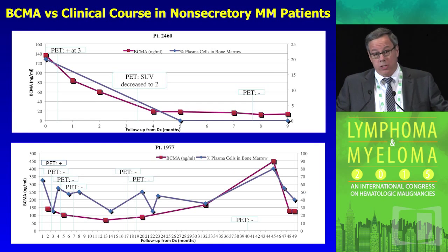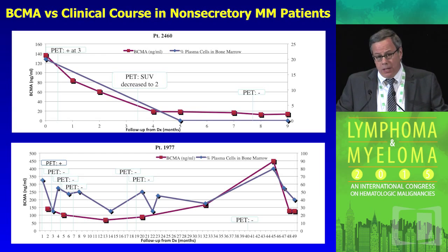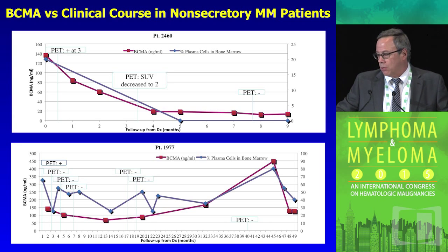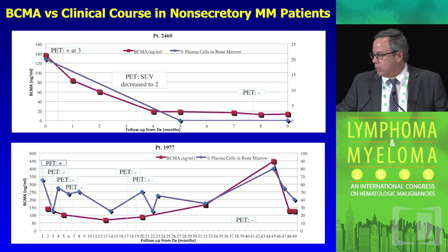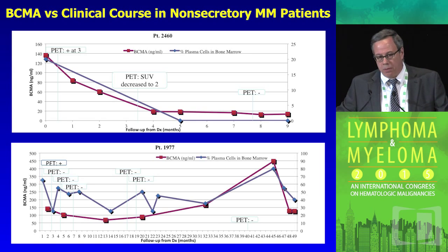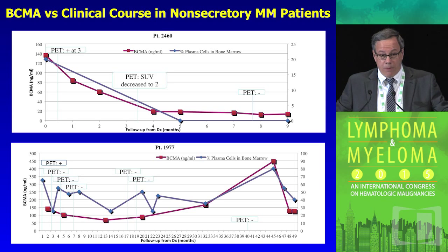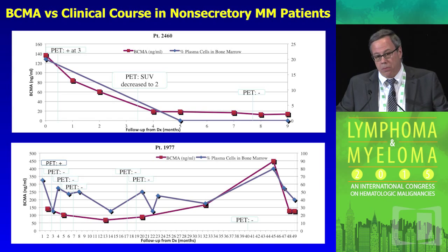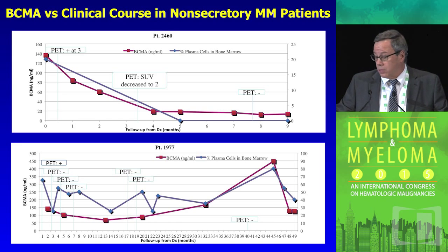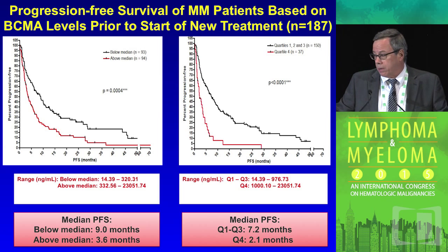Very interestingly, serum BCMA also allows you to follow non-secretory disease. In a subset of about 7 or 8 patients, the first patient — seen this week in complete remission on a Velcade-based regimen — presented with a PET scan lighting up and about 25% plasma cells; serum BCMA was 140. It has now dropped to normal, and repeated bone marrows show no evidence of plasmacytosis, with PET scan remaining negative. The second patient, a psychiatrist from Berkeley, has been very easy to follow — BCMA tracks beautifully with bone marrow percentages and PET scan changes. We now have a marker to follow this subset of patients who previously could only be followed with PET scanning and bone marrow.